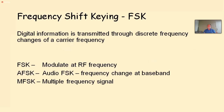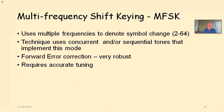Frequency shift keying: digital information is transmitted through discrete frequency changes. If we call it FSK, we modulate — we change the frequency at the RF level. If we call it AFSK, we change the frequency at the baseband where the signal originates. Or we can have multiple frequency shift keying (MFSK): more than one frequency on the carrier, anywhere from 2 to 64 different tones. Because the tones are being sent, you need accurate tuning — if you're off, you won't be able to decode it at all.